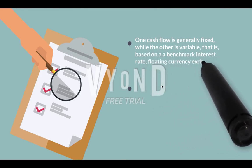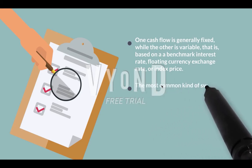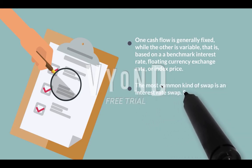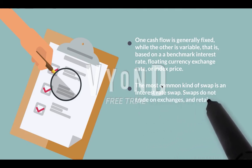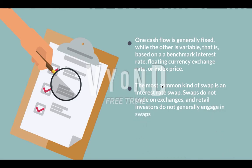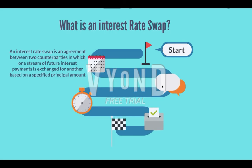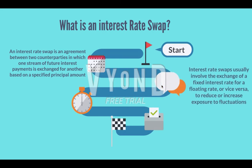One cash flow is generally fixed while the other is variable — based on a benchmark interest rate, floating currency exchange rate, or index price. The most common kind of swap is an interest rate swap. Swaps do not trade on exchanges and retail investors do not generally engage in swaps. An interest rate swap is an agreement between two counterparties in which one stream of future interest payments is exchanged for another based on a specified principal amount.